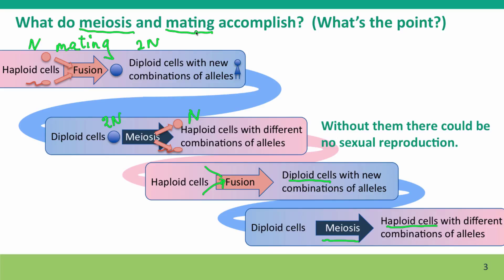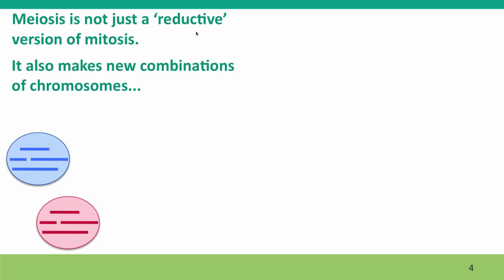If we only had mitosis, genomes would get smaller and smaller. If we only had mating, our genome would double in size with every generation. We need the two reciprocal processes together to keep our chromosome numbers constant. But meiosis and mating aren't just a way to keep our chromosome numbers constant. Meiosis in particular isn't just a reductive version of mitosis taking us back to the haploid numbers that we had before mating. Meiosis also makes new combinations of chromosomes and of the sequences within chromosomes.